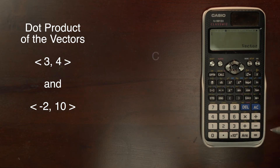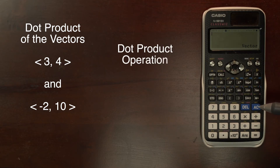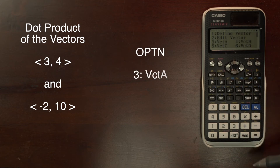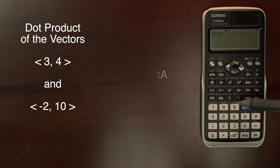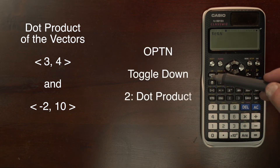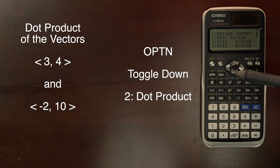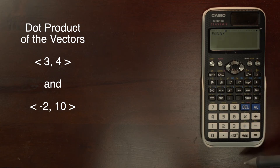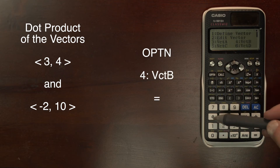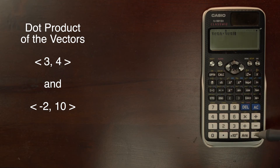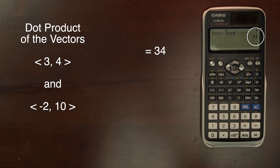Clear the screen. Now we can work on doing the dot product operation. So we hit option, 3, and that will give us our vector A. We then hit option, toggle down, and select dot product, which is 2. Then option and select our second vector B, which is 4. Hit equal and we have the dot product of those two vectors: 34.